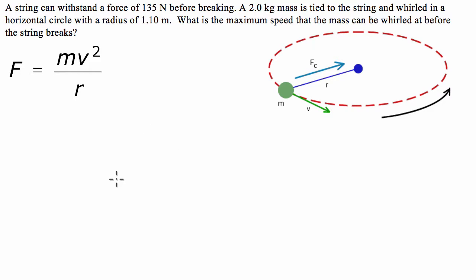G'day guys, quick video here on centripetal acceleration slash centripetal force where we have a string that can withstand a force of 135 newtons before breaking. A 2 kilogram mass is tied to the string and whirled in a horizontal circle with radius 1.1 metres. What is the maximum speed the mass can be whirled at before the string breaks?